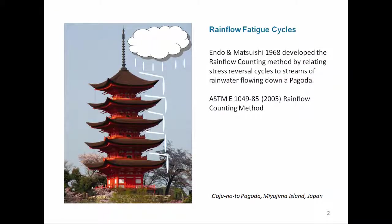As a review, I showed this slide in the previous webinar on rainfall counting. This is a pagoda on an island in Japan. Two Japanese engineers and researchers named Endo and Matsuishi published a paper in 1968 where they developed the rainfall counting method by relating stress reversal cycles to streams of rainwater flowing down a pagoda. The implementation I'm using is taken from ASTM E1049-85, and I encourage you to get a hold of that reference.